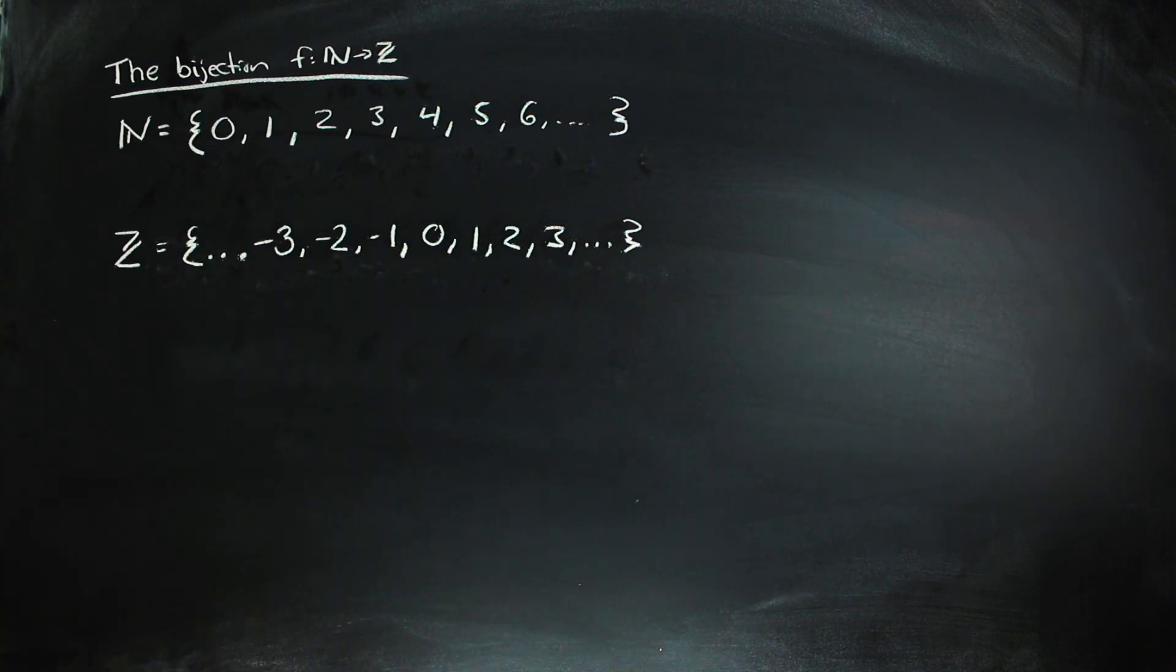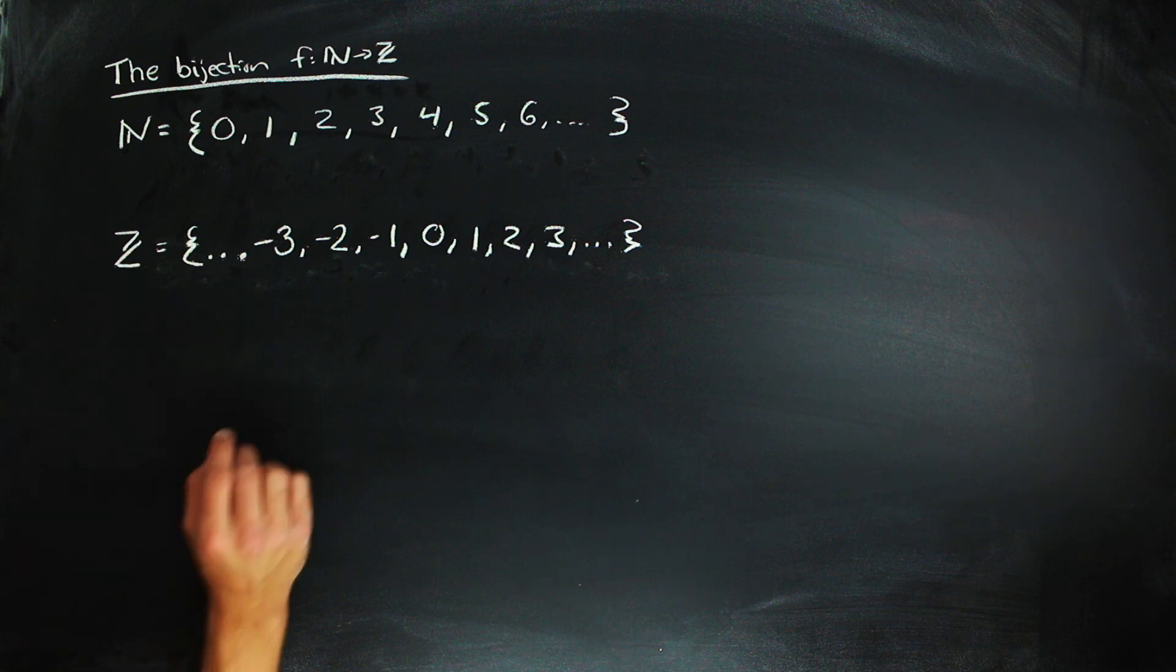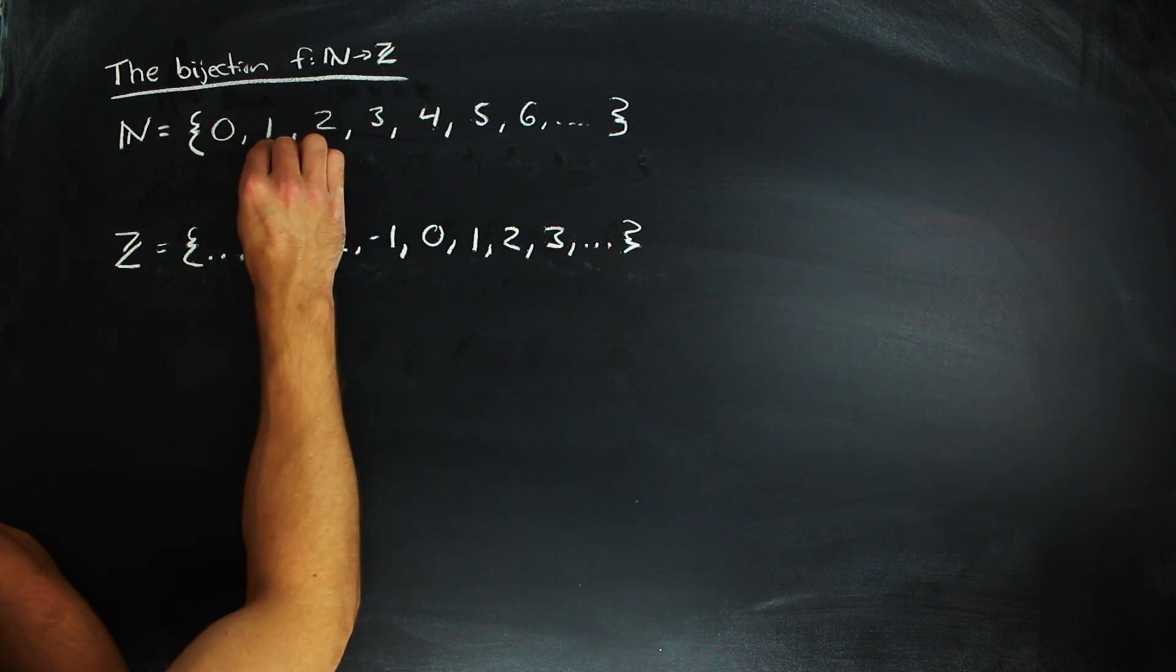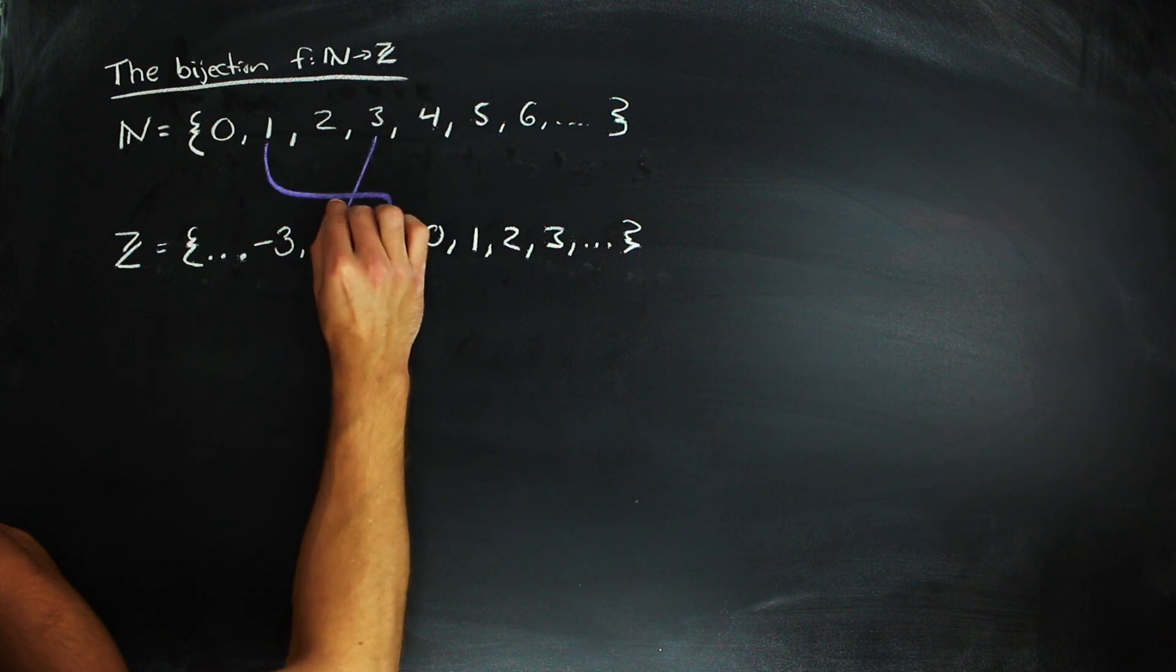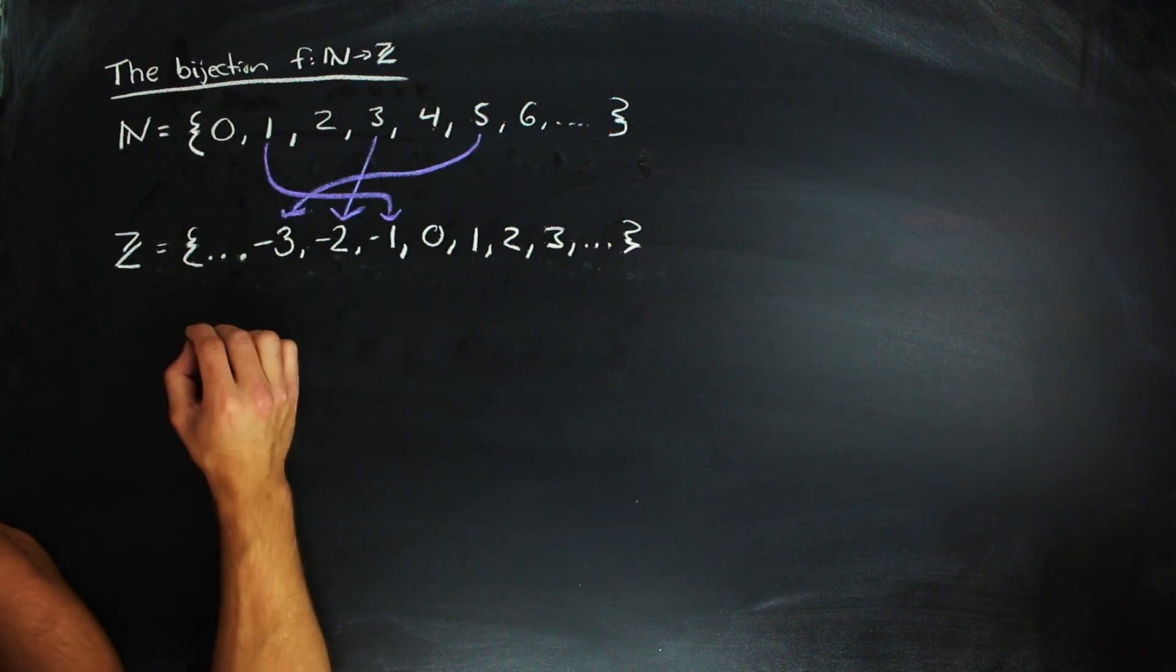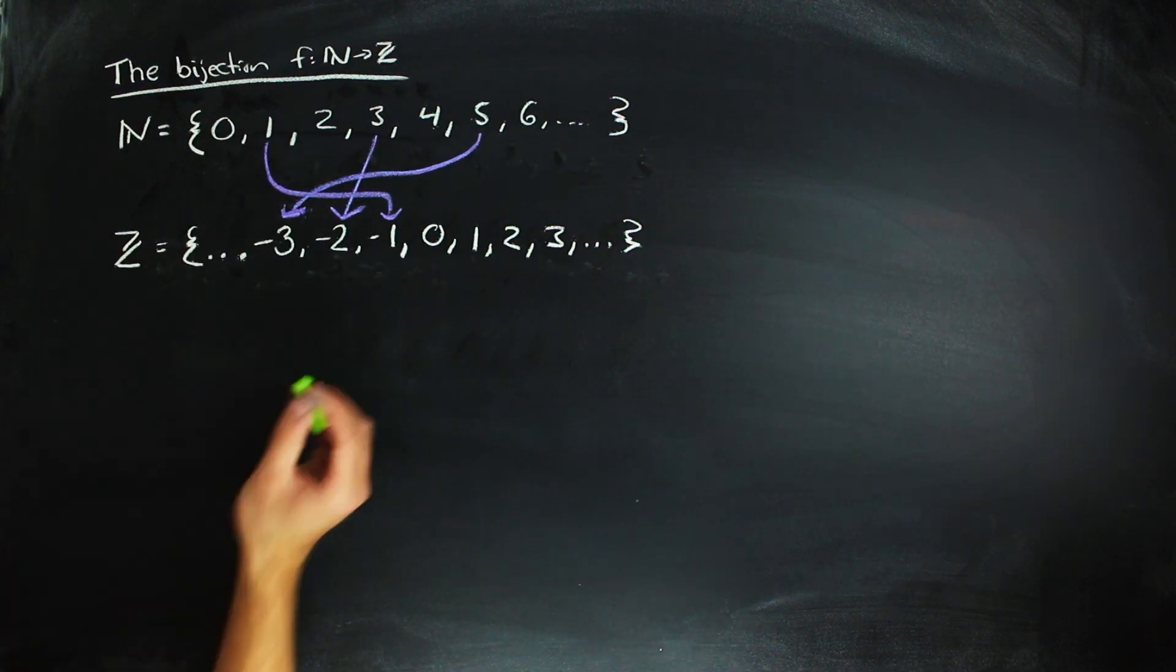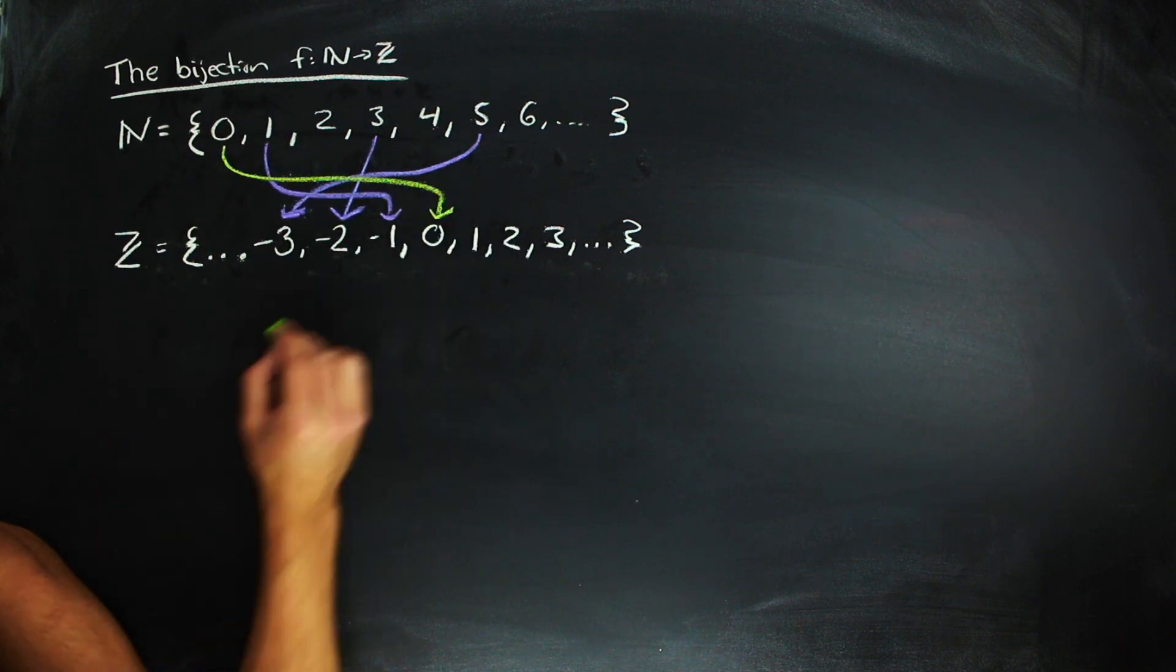If you want to take a moment to think about a bijection that exists between the two sets, now would be a good time to go ahead and pause and think about it. Okay, so in order to form this bijection, we're going to let the even numbers go to the positive integers, the odd numbers go to the negative integers, and zero go to zero.